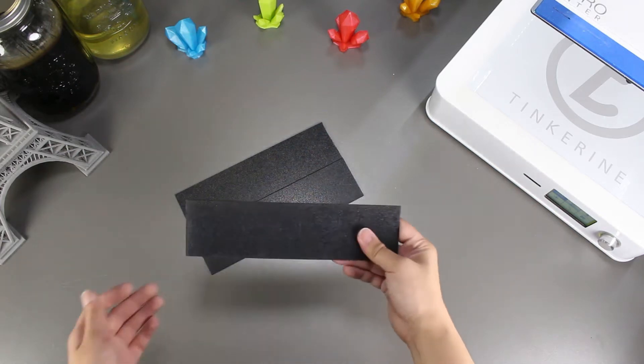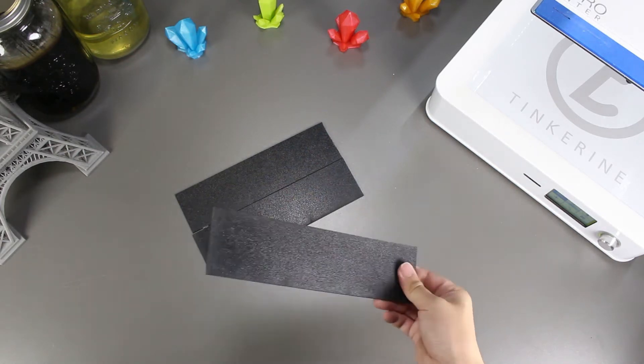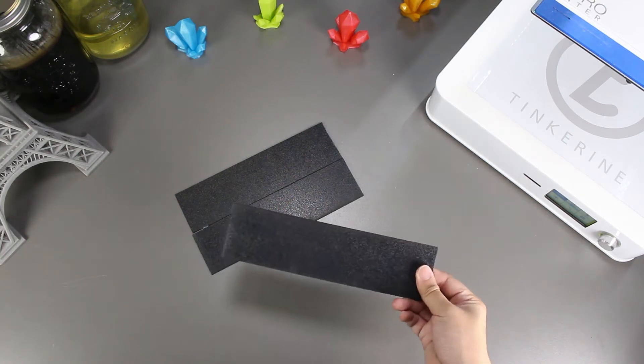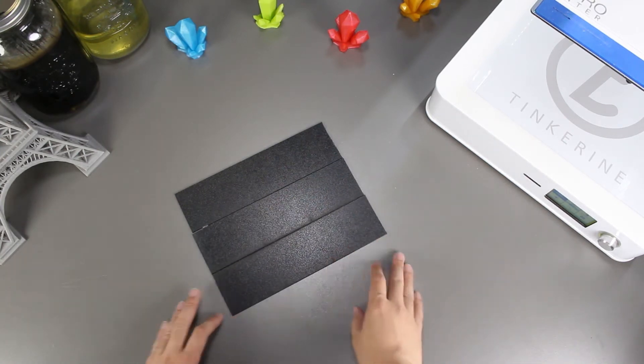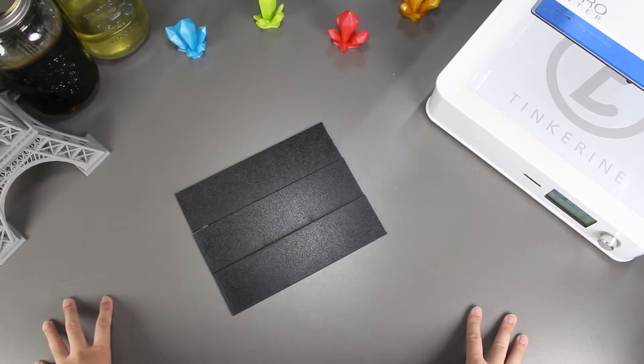Welcome to another episode of Tinkering Experiments. Today we are going to try and print on a sheet of ABS. We found out previously that PLA sticks very well to ABS sludge, but what about just a sheet of ABS?